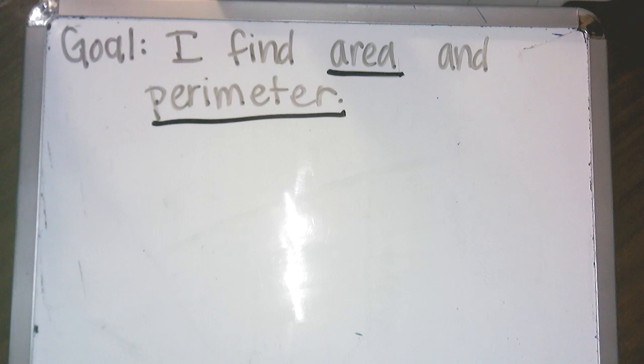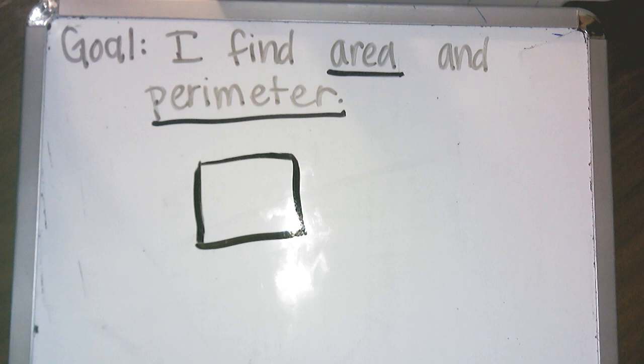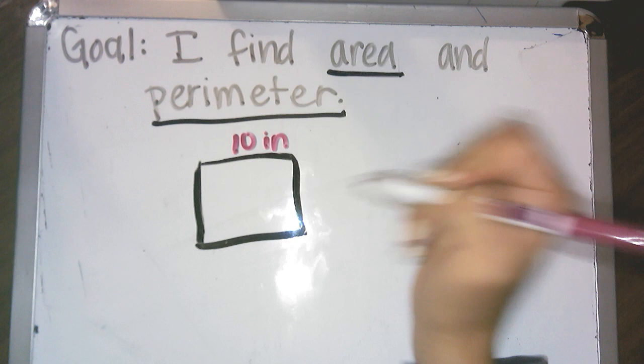So let's say you have a shape. We'll start with a square because that's what we just had. Now a square, you'll remember, all the sides are the same. So if we have 10 inches here and we know this is also 10 inches and this is also 10 inches...